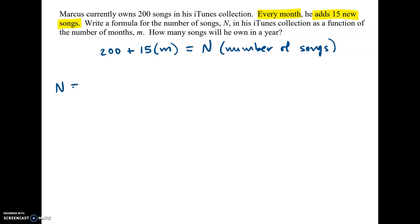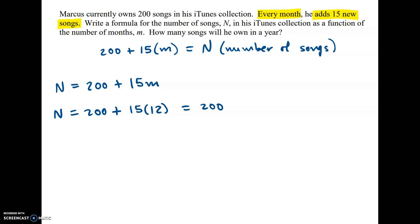So if n equals 200 plus 15m, how many songs will he own in a year? Well, there are 12 months in a year. So n is going to equal 200 plus 15 times 12, which is 200 plus 180. So after a year, Marcus will own 380 songs — so in a year, Marcus will own 340 songs.